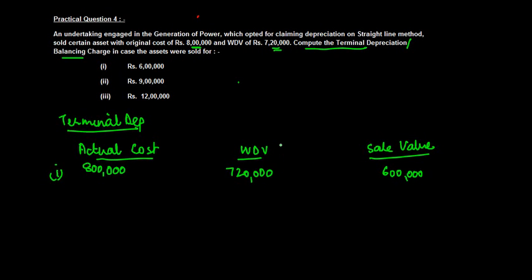If the sale value is less, what does this mean? This means that while the assessee would have claimed a depreciation of 7 lakh 20,000 if he didn't sell the asset, now what he is getting in return is only 6 lakh, which means he is supposed to get some further depreciation. This depreciation is known as terminal depreciation.